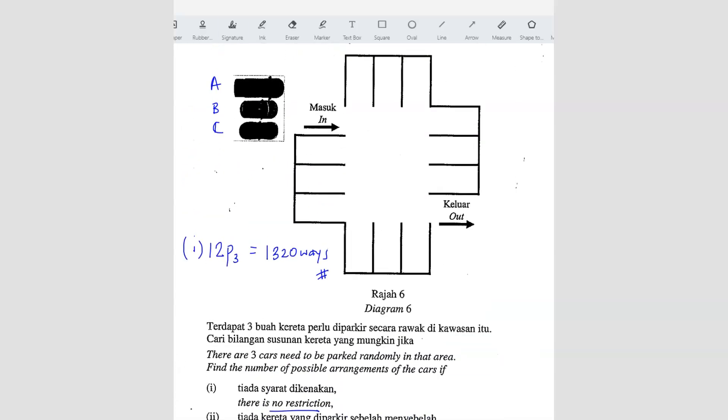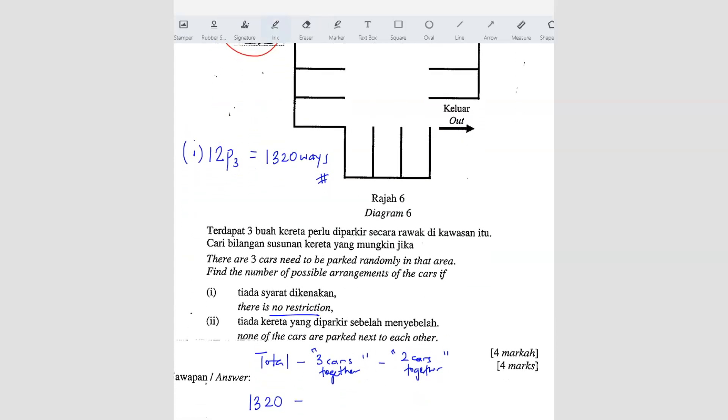So total minus 3 cars together, minus 2 cars together. So total, we already know, which is 1,320. Minus 3 cars together. So 3 cars together, that means the first option is all 3 in this place, right? All 3 here. So that means we can use 3P3. Out of these 3 cars, all going to fit into these 3 slots. So 3P3. But you can also fit in here, here, and here. So there are 4 possibilities. So that means you have to times 4. That's the first option when 3 cars are together. So 3P3 times 4 possible options.